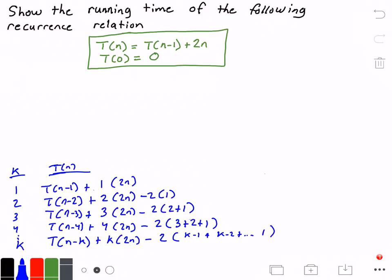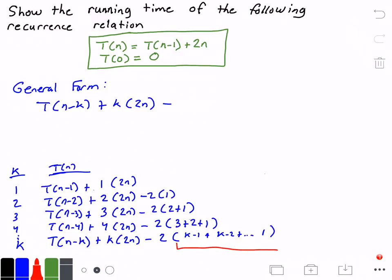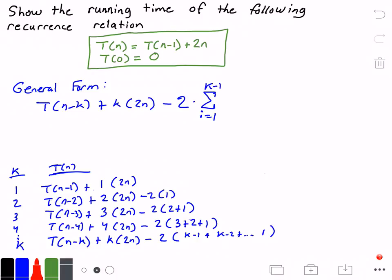So the general form is: t(n-k) + k·2n - 2 times the summation from i=1 to k-1 of i. That summation captures the pattern we observed in the trailing terms at each iteration step.